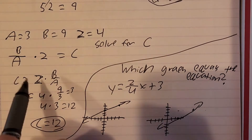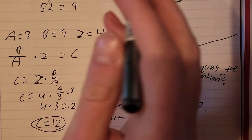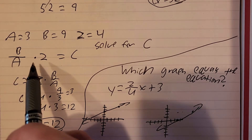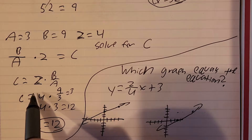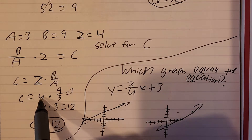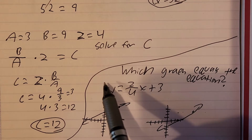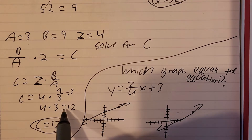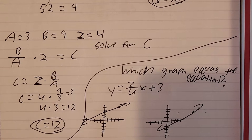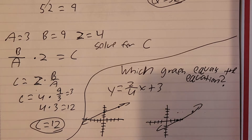So: A equals 3, B equals 9, Z equals 4. Solve for C. We've got B over A times Z equals C. So then C equals Z times B over A. C equals 4 times 9 over 3. Nine over 3 equals 3, so then you just have 4 times 3, which equals 12. So C equals 12. The hardest thing for me were these graphs — I think I'm missing one of the math sections, but I have some graph examples as well.